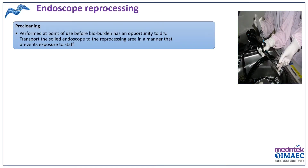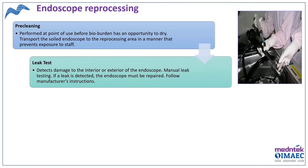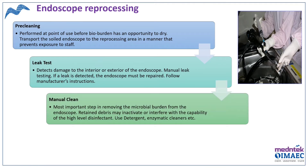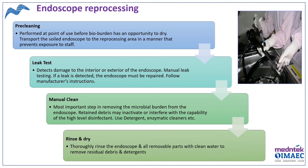After pre-cleaning, instruments are taken for disinfection. As an example, we will look at endoscope reprocessing. The first step is pre-cleaning, where the bio-burden and organic material or soil from the endoscope is reduced. Next is the leak test, where the endoscope is tested for any leakages to ensure proper functioning. Then comes manual cleaning, where the endoscope is dismantled and every part is manually cleaned with detergent or enzymatic cleaners. After that, the endoscope is rinsed and dried to remove detergent or residual debris.